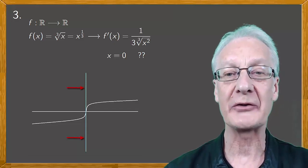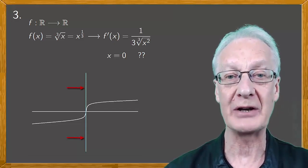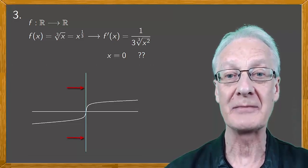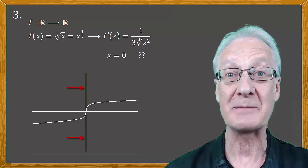So a third case for which a function is non-differentiable at a point is when the tangent to the graph is vertical. Now don't forget this case because many people do.